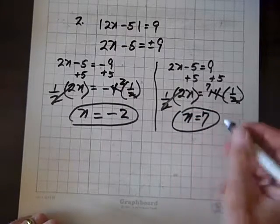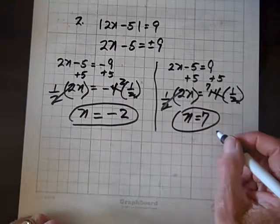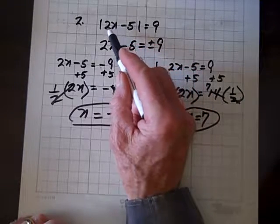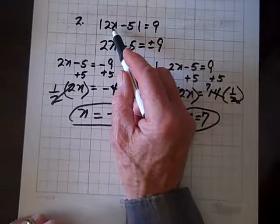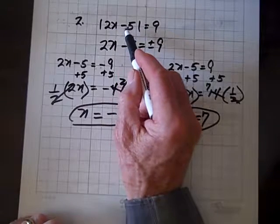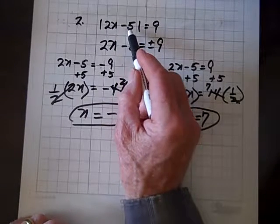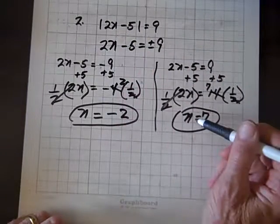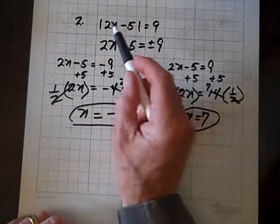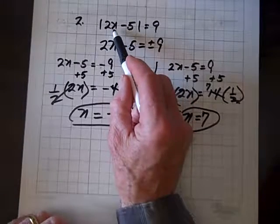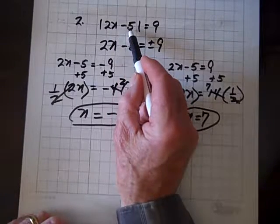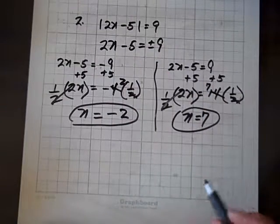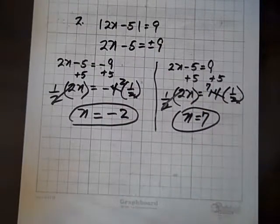Now look, we can check our work. If you replace n with negative 2, you get 2 times negative 2, which is negative 4, minus 5 is negative 9, and the absolute value of negative 9 is 9. Let's check this case. Let n be 7. 2 times 7 is 14, minus 5 is 9, and the absolute value of 9 is 9. So we checked our work. It worked. We're done.